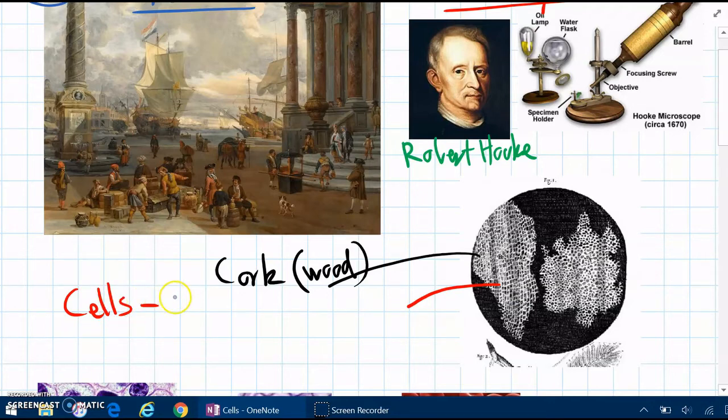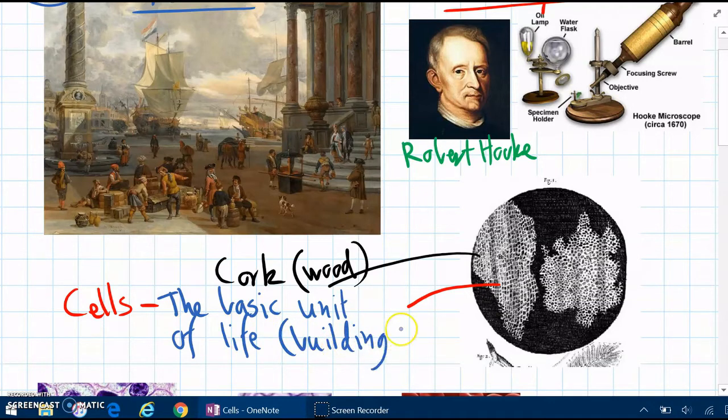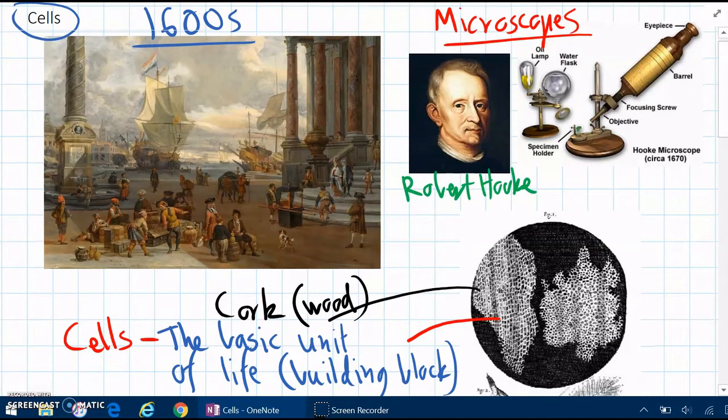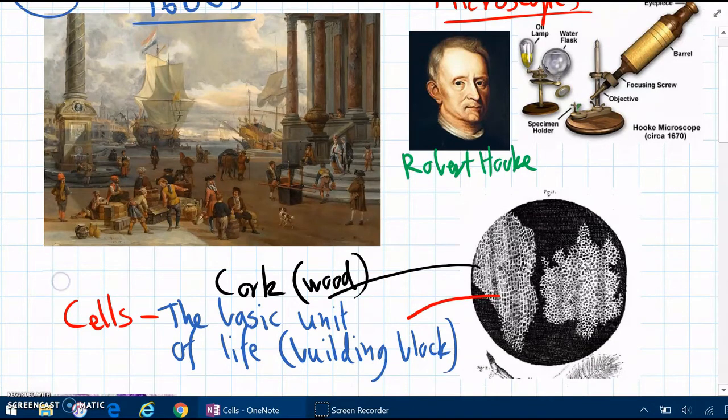So to define them, we can call cells as the basic unit of life. Or in other words, they're like a building block. So every living thing, ever since the 1600s, every living thing that we've looked at with microscopes is always made of cells. So we know that that's one thing all living things have in common.